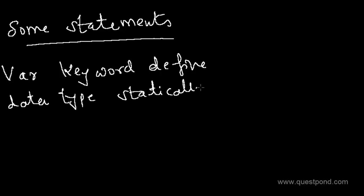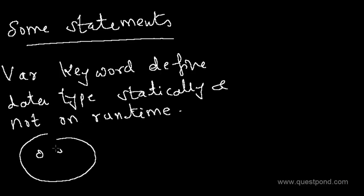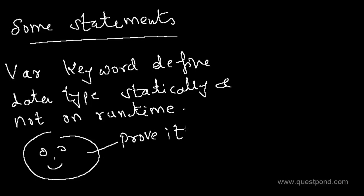The var keyword is defined statically and not dynamically. In other words, it is not something like the object type which can be pointed once to an integer and then to a string, where on runtime the data type will adjust itself. It's actually statically defined. Let me prove this point by showing some practicals.